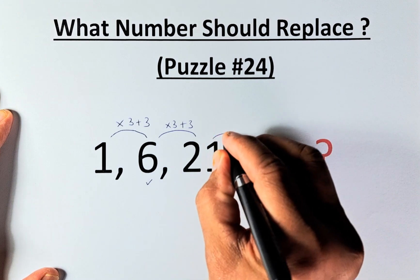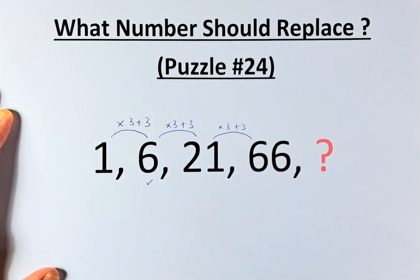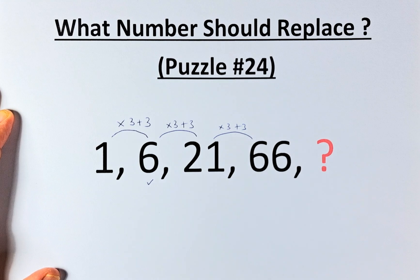Similarly, 21 to 66, we do the same thing. We multiply by 3 and add 3. 21 times 3 is 63, 63 plus 3 is 66.